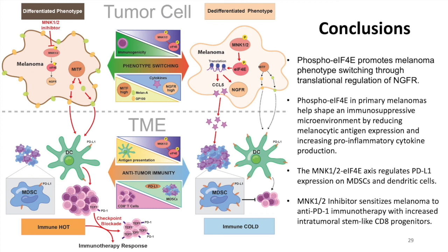In conclusion, we showed in this paper that Phospho-EIF4E promotes melanoma phenotype switching through translational regulation of NGFR. Tumor cell intrinsic Phospho-EIF4E also helps to shape an immunosuppressive microenvironment by reducing melanocytic antigens and increasing pro-inflammatory cytokines, which blocks T cells and attracts MDSCs. In the tumor microenvironment specifically, the MINK-EIF4E axis regulates PD-L1 expression on dendritic cells and MDSCs. Blocking Phospho-EIF4E by MINK inhibition sensitizes melanoma to anti-PD-1 immunotherapy with an increase of stem-like CD8 progenitor cells. We hope this study could help to inform the translational and clinical development of MINK inhibitors in combination with immunotherapy, and ultimately help to benefit more melanoma patients.